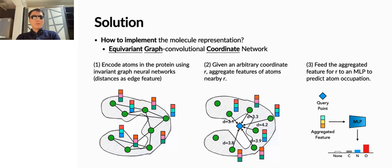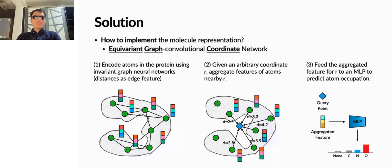The problem is how to implement such a representation. In this work, we propose a coordinate network architecture that is equivariant and graph convolutional to represent molecule density maps. The network mainly consists of three stages. First, it encodes each atom in the contextual protein. Then, given an arbitrary 3D coordinate R, it aggregates features nearby R. Finally, the aggregated feature is fed to an MLP to predict the density of atom occupation.